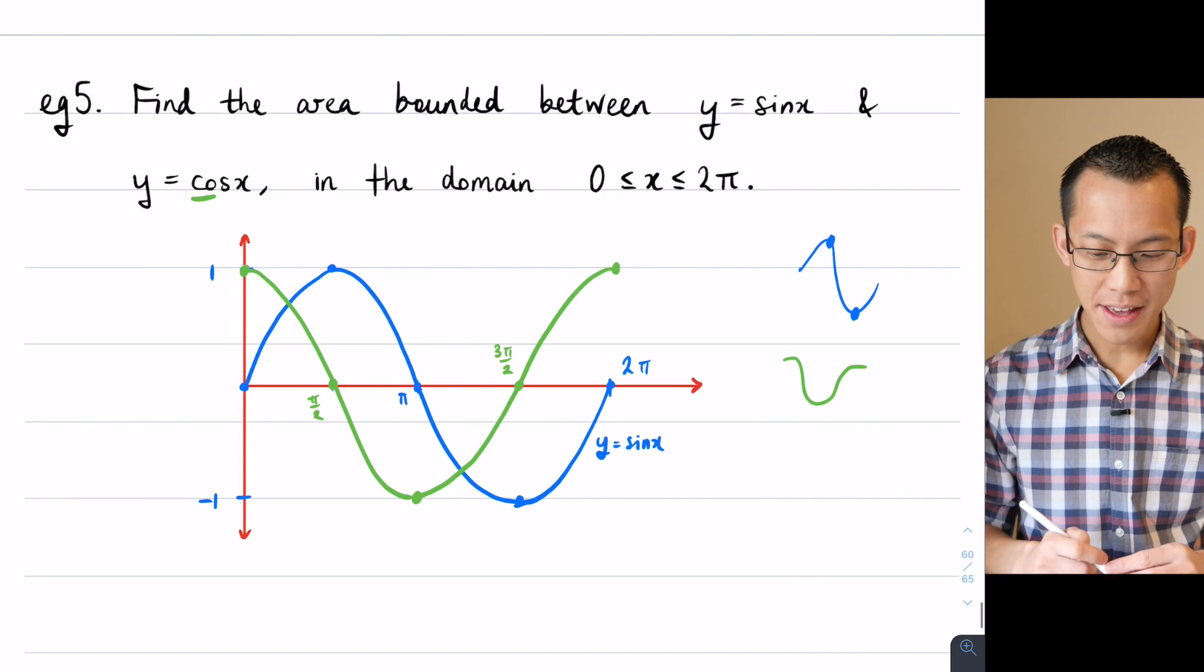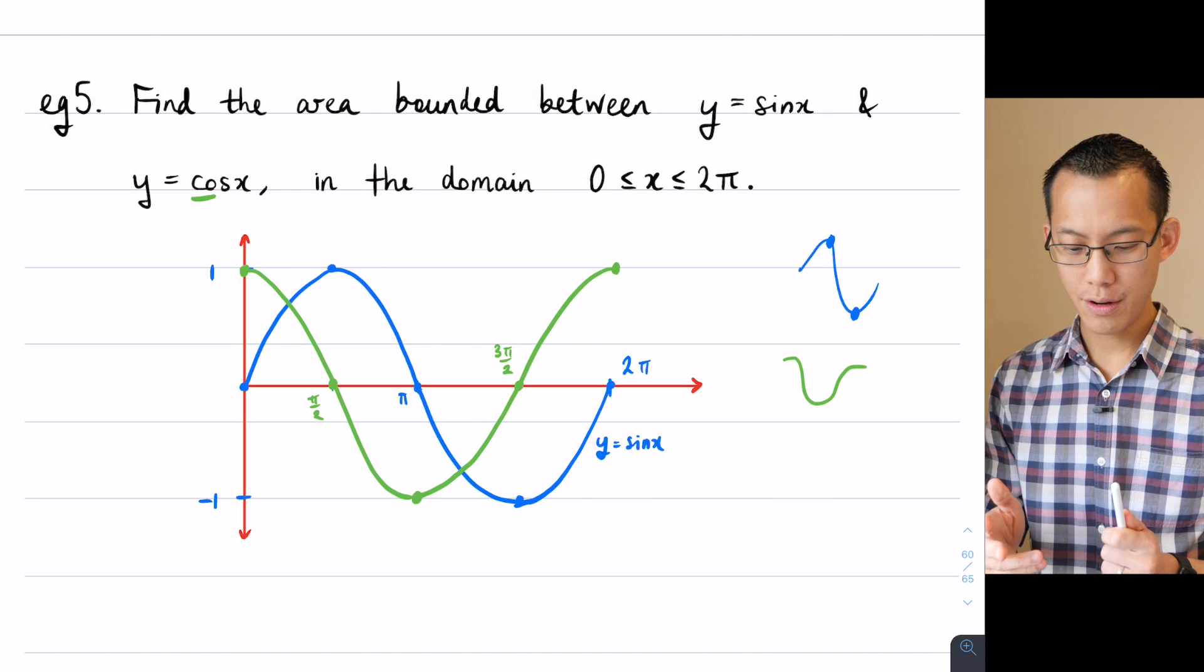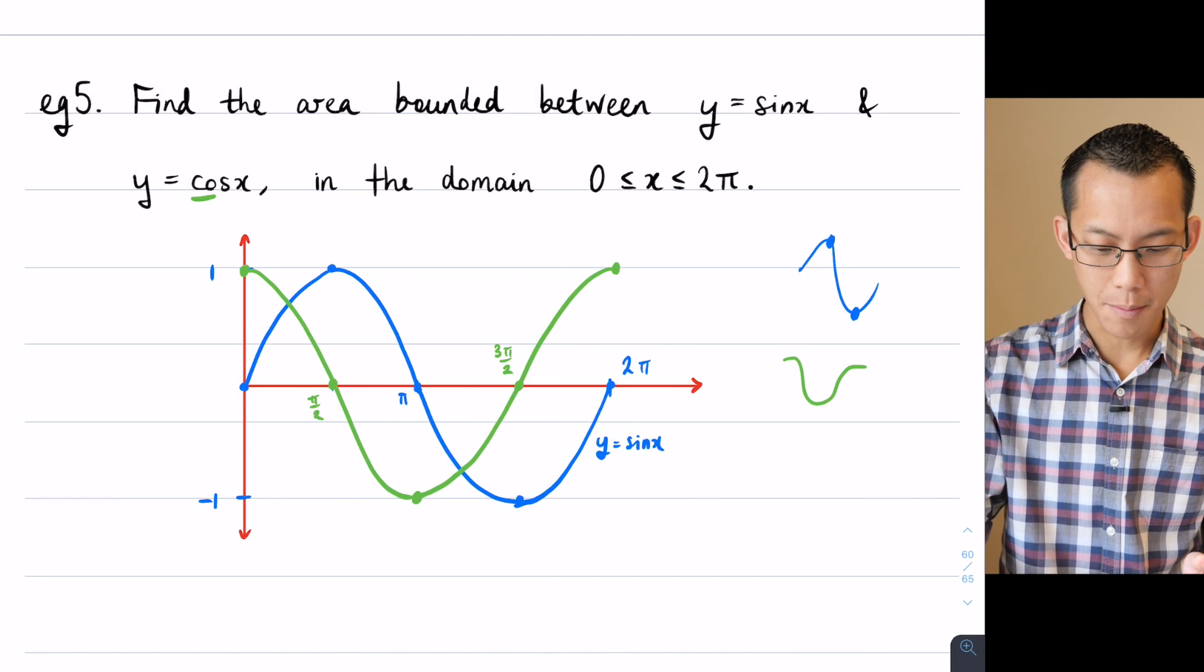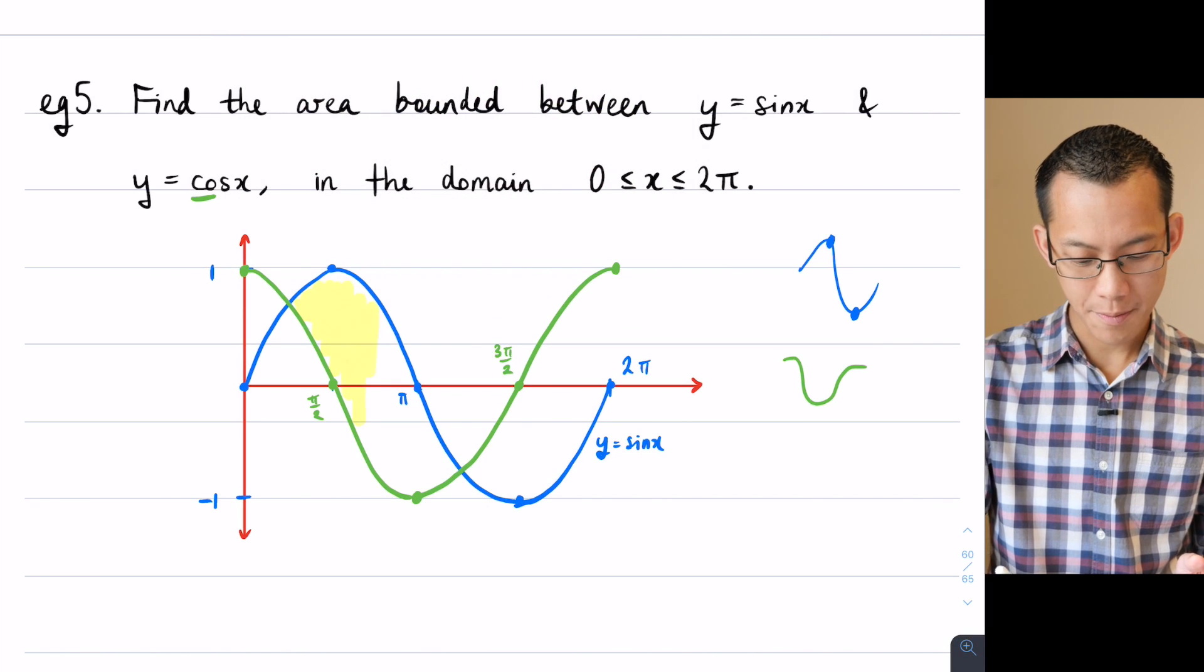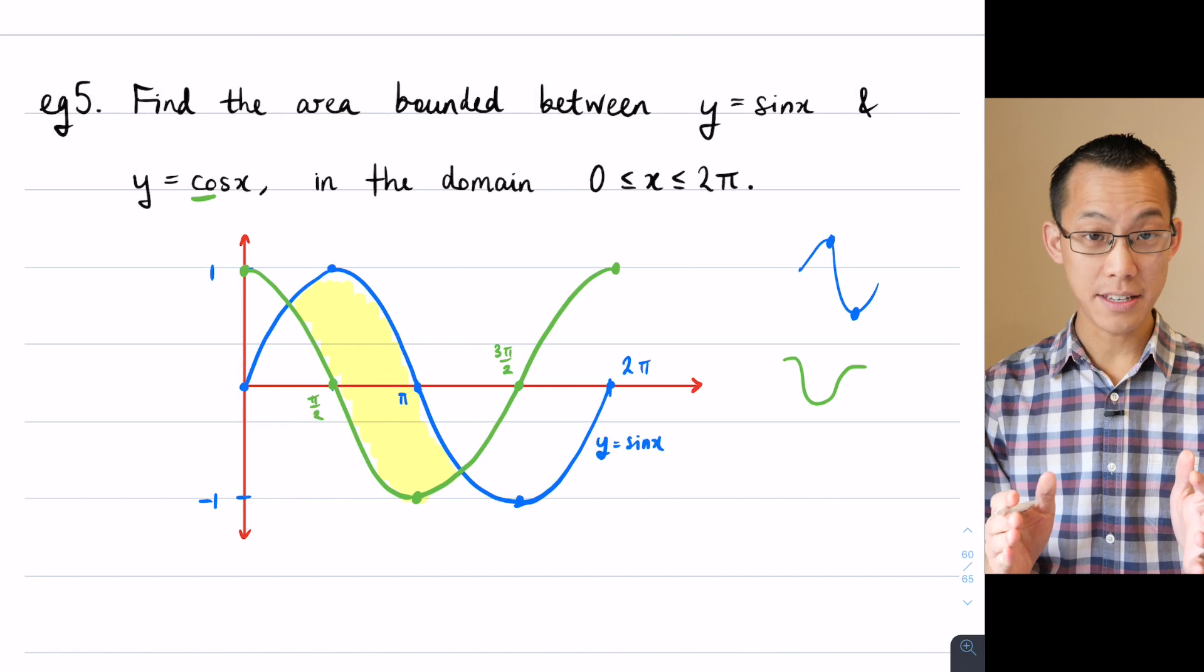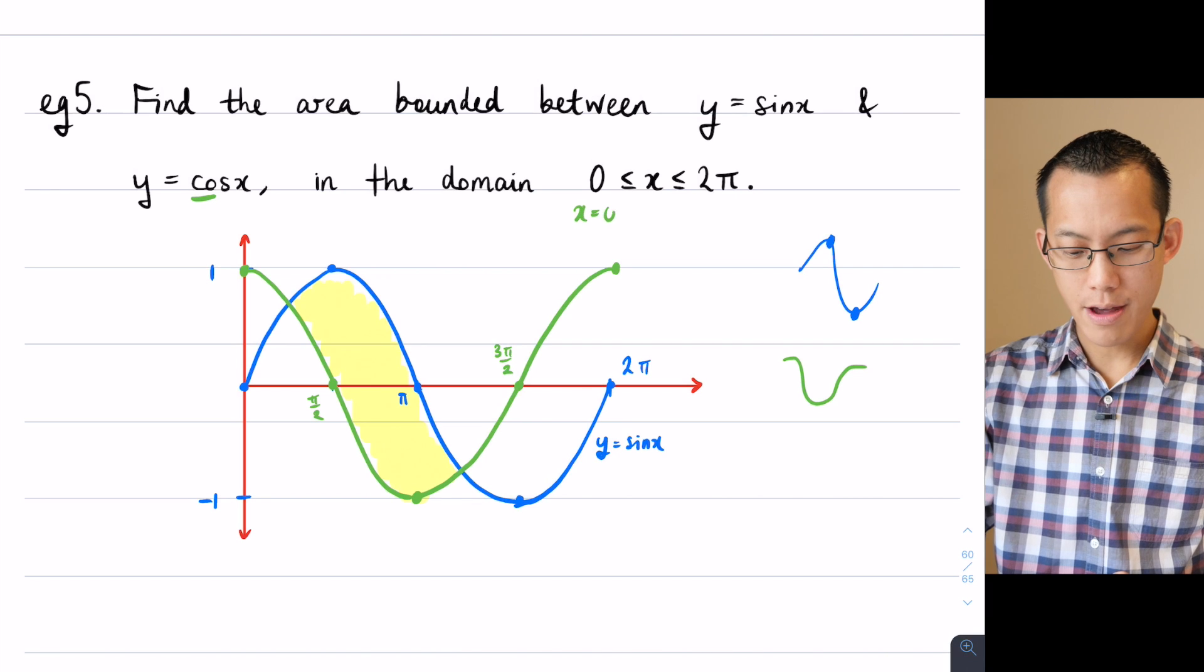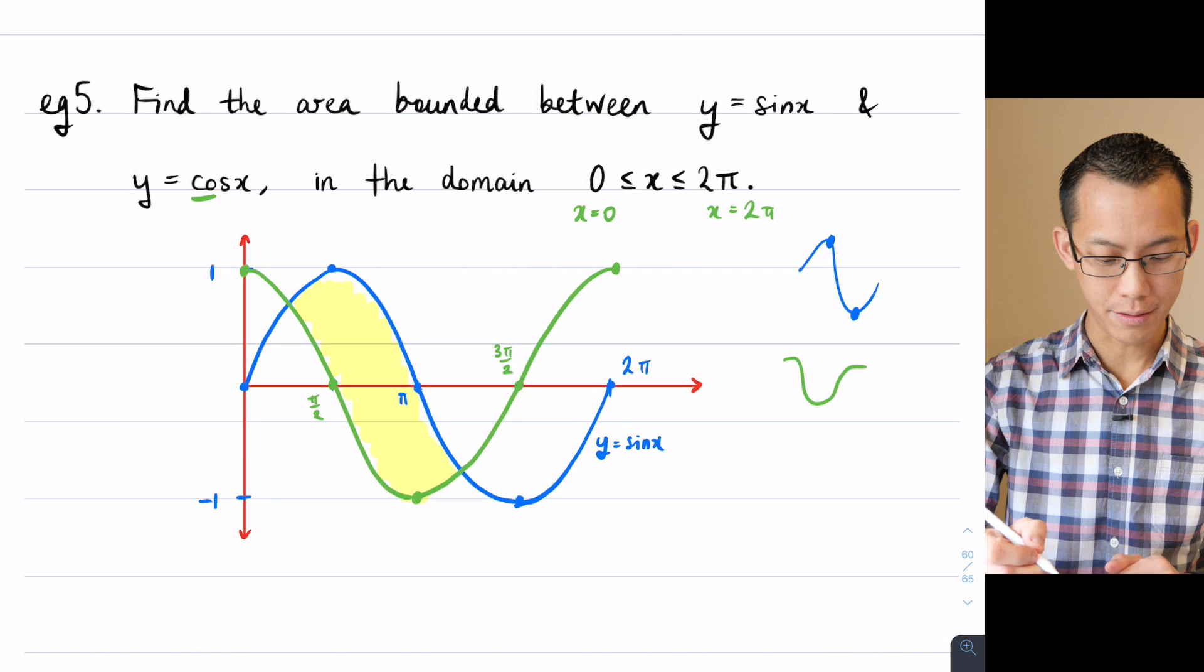Now what does the question say? It says find the area bounded between these two curves in the domain 0 to 2π. Now there's a bit of sneaky language in here because the area bounded between them at the moment is just going to be, I'm going to shade it in yellow here, it's just going to be this part over here. But this language in the domain 0 to 2π actually suggests to me that there's other lines that are being implied here. When I say from 0 to 2π, there's also an x equals 0 and an x equals 2π line that are kind of on the fences, if you like, of this boundary. So I'm just going to put them in.